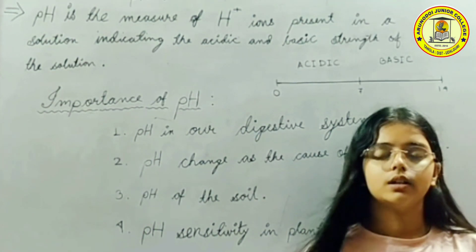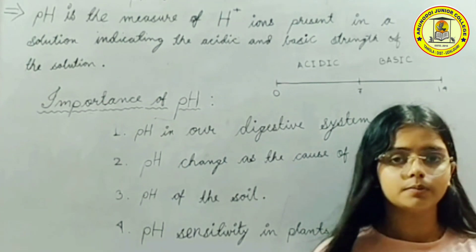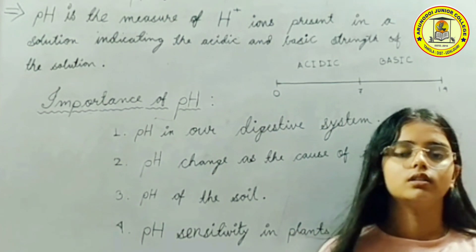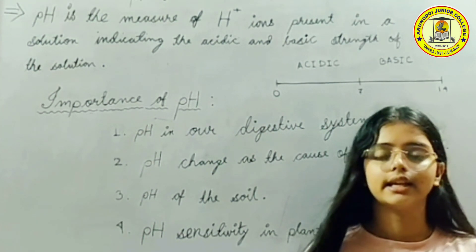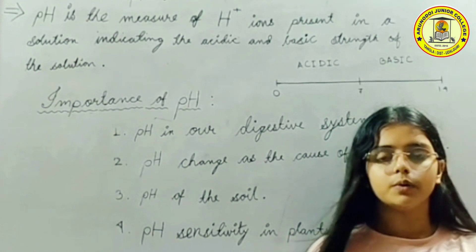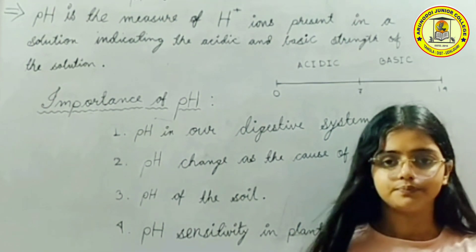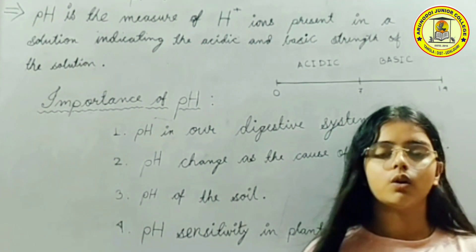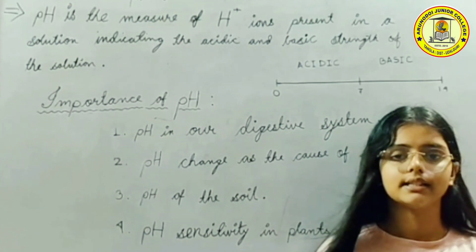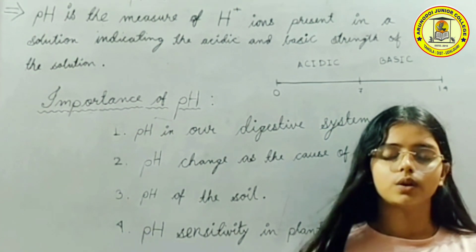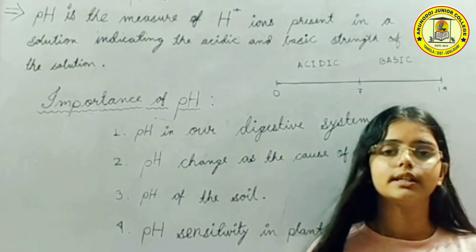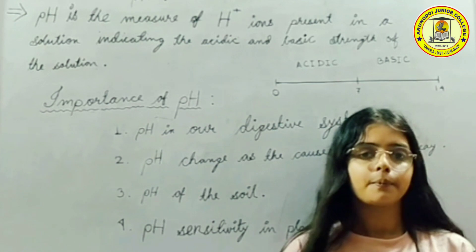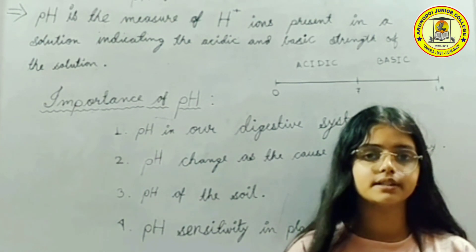Point number one: pH in our digestive system. Our stomach has an acidic pH due to the secretion of hydrochloric acid, which aids in digestion. But when the amount of acid goes beyond a certain limit, it causes pain and irritation. To neutralize the excess acid, a mild base called antacid is usually taken.